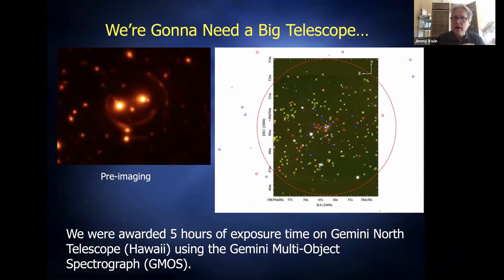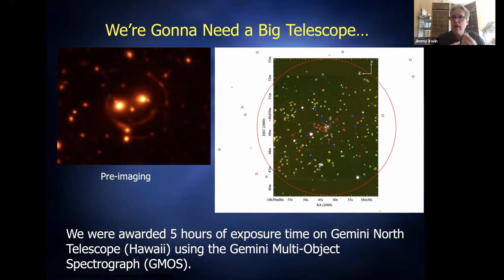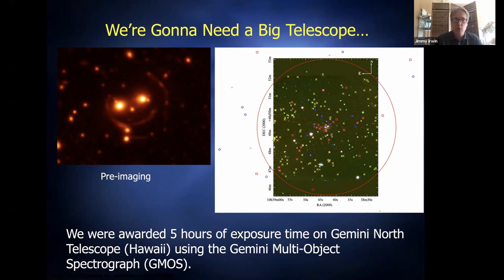With five hours of exposure on the eight-meter Gemini North, we obtained spectra of about 75 objects across our two masks, spending roughly two and a half hours on each. The colored boxes on our field image show objects for which we successfully measured spectra; yellow X marks are galaxies we had to leave out due to space limitations on the masks. With our results in hand, we got broadly what we expected.